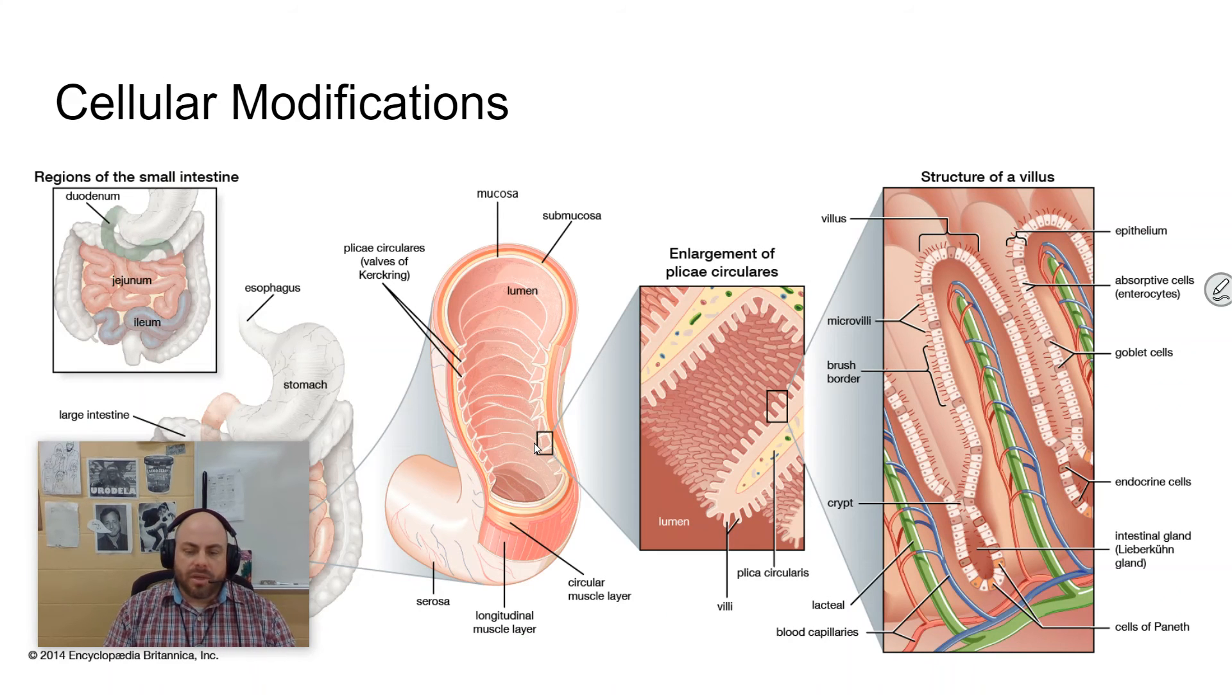And so this creates a whole lot of surface area for the primary function of the small intestines, which is nutrient absorption. We were able to absorb a lot more nutrients because we have a lot more surface area to volume ratio than we did if this was just simply a smooth pipe in our guts.